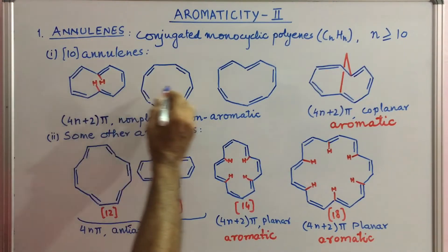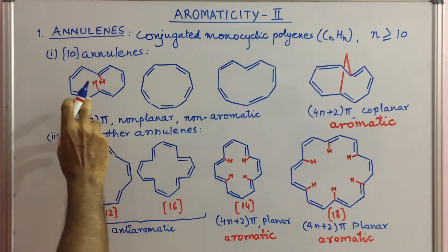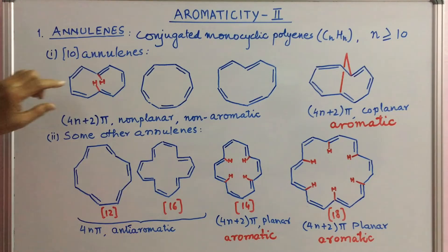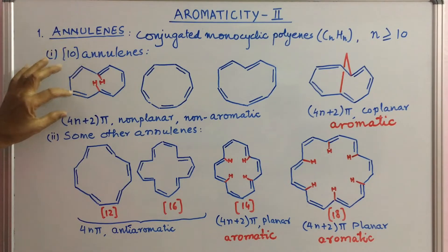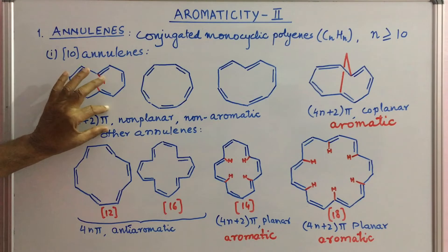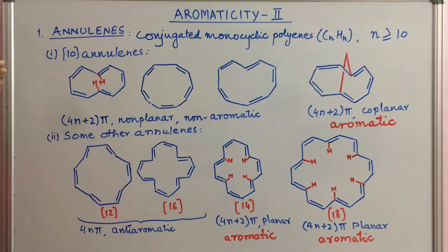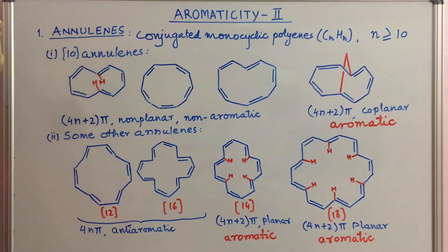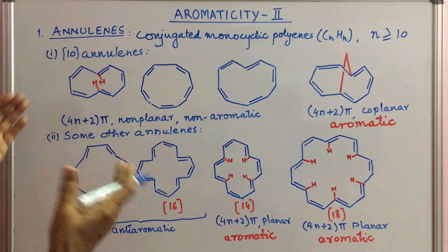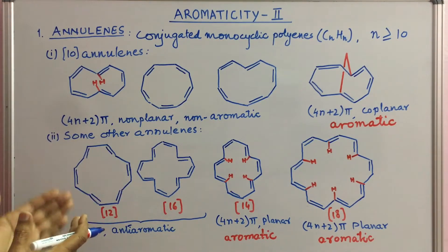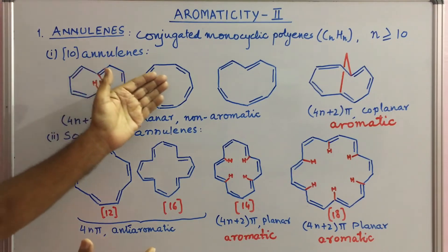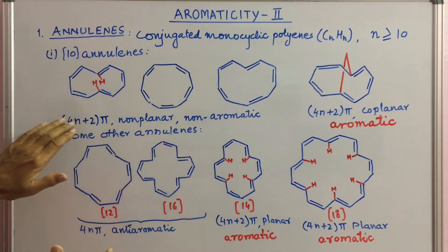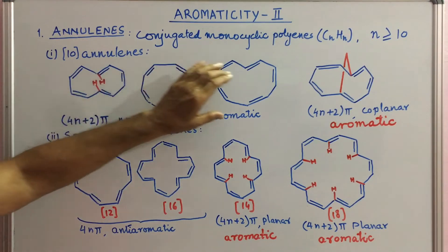These are 10-annulenes in which there are 10 carbon atoms. In this system, although there are 4n+2 pi electrons, because of the proximity of these two hydrogen atoms the planarity is disturbed and the molecule becomes non-planar. Similarly, this isomer is also non-planar, and hence they are non-aromatic.